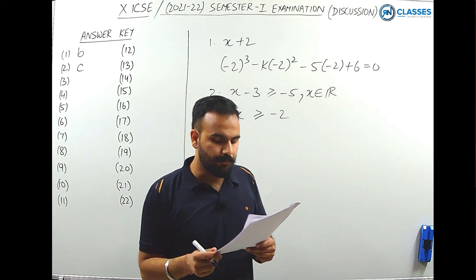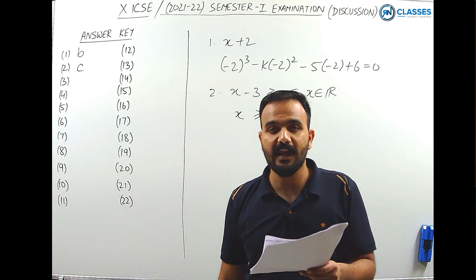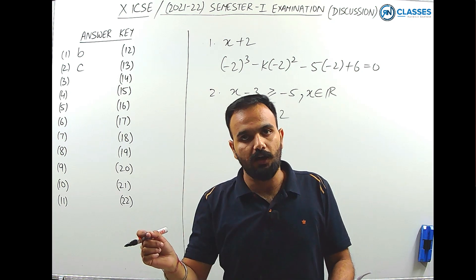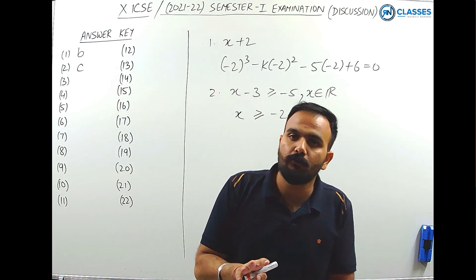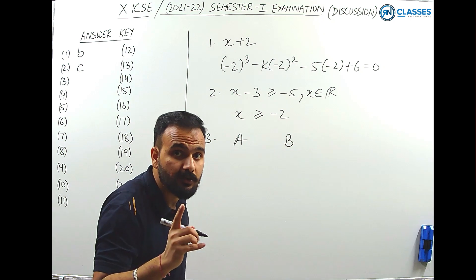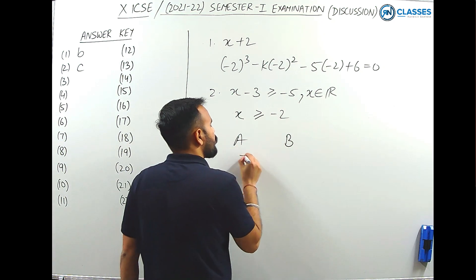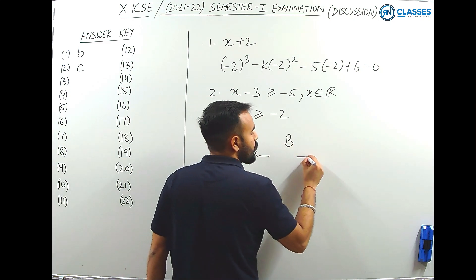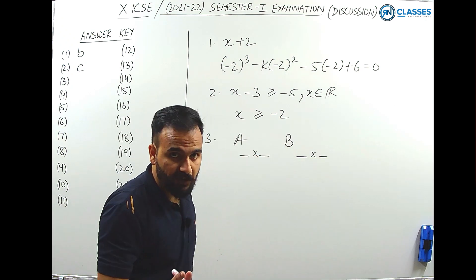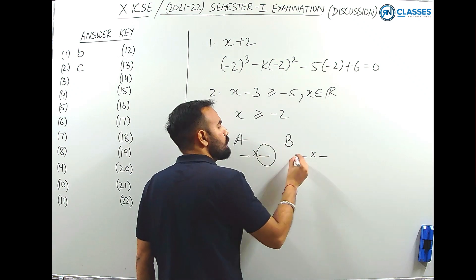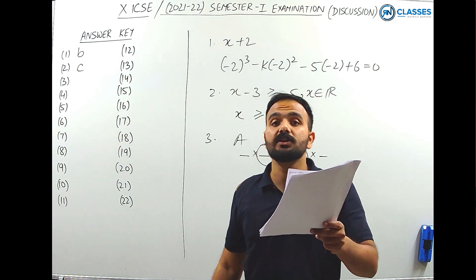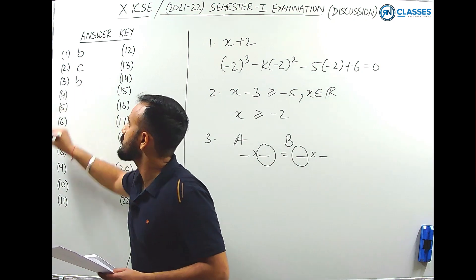Question 3: the product AB of two matrices A and B is possible if — when is the product of matrices defined? What matters is their orders. The product is defined when the number of columns of the first matrix equals the number of rows of the second matrix. That statement is given in option B, so B is the correct answer.